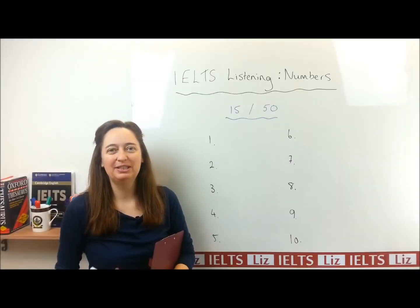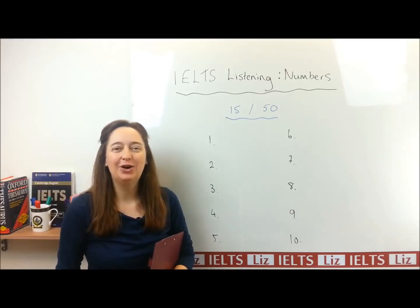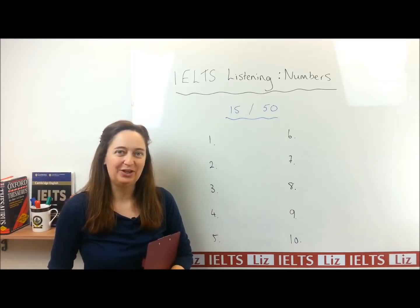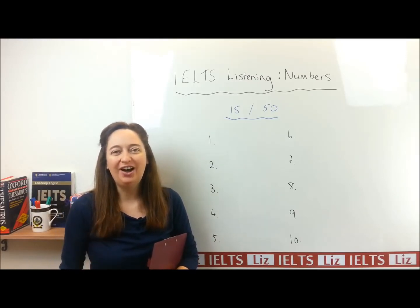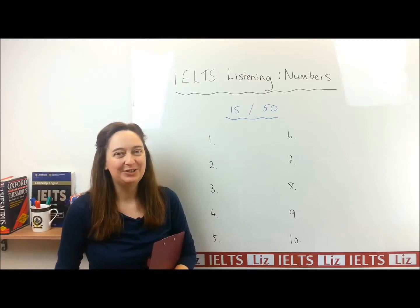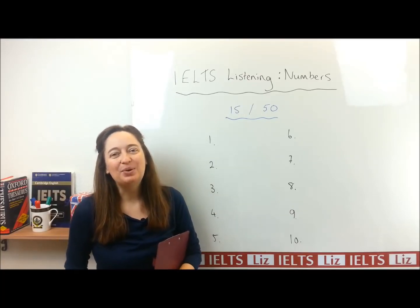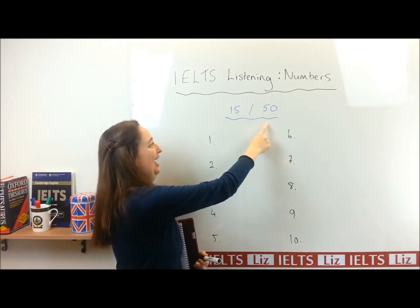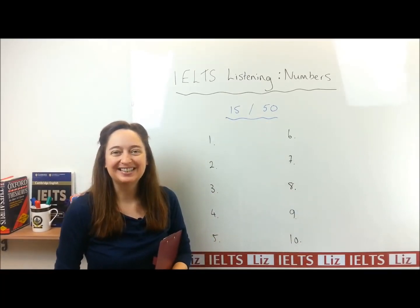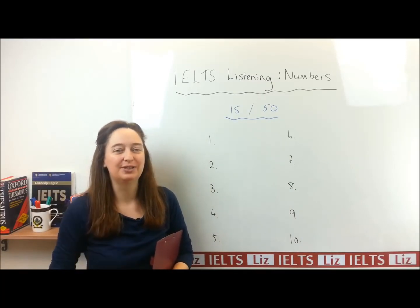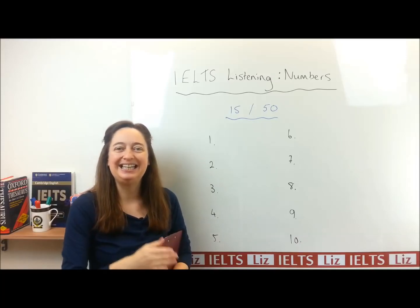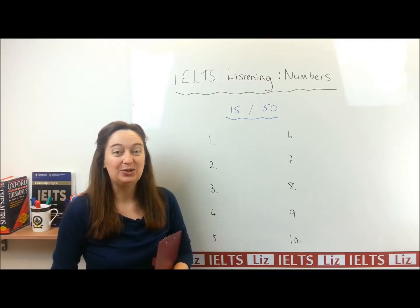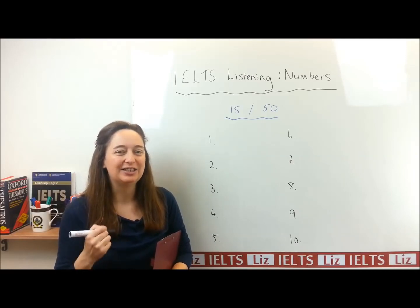Hello. In this lesson, we're going to look at something that is very common for IELTS listening. In the listening test, you often need to listen and write down a number. IELTS know all the problems that many students have with numbers in English, and one of the common problems is the difference between 15 and 50. Even for us, sometimes it can be difficult to hear the difference between 15 and 50, 16 and 60. So IELTS often gives you those numbers in the test to test your ability to hear and understand in English.